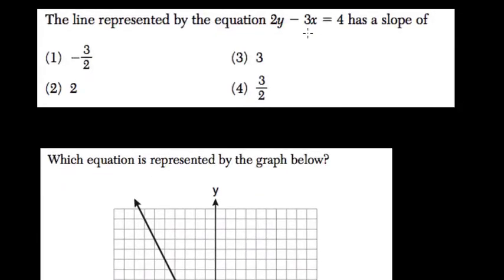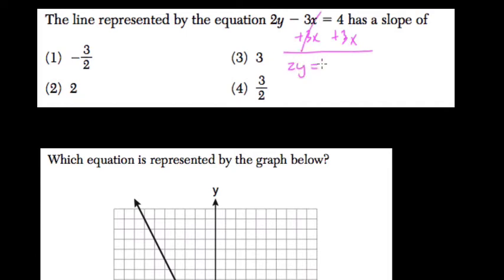What's the slope of this line? Well, I'm going to get it in slope-intercept form — add 3x to both sides. This cancels out. We get 2y equals 4 plus 3x.